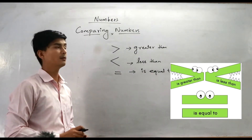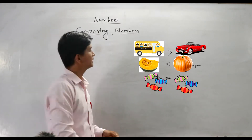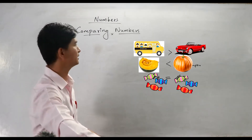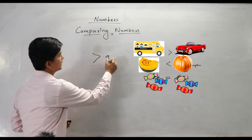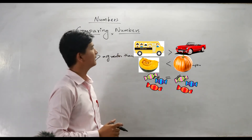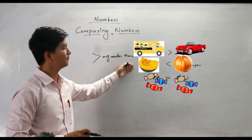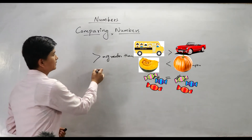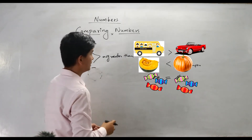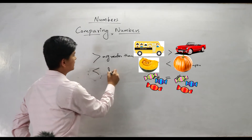You can see here some pictures where I have compared objects. In the first picture you can see a bus and a car — the bus is bigger than the car, so we use the greater than symbol. In the second picture you can see a piece of pumpkin and a whole pumpkin. The whole pumpkin is bigger than the piece.